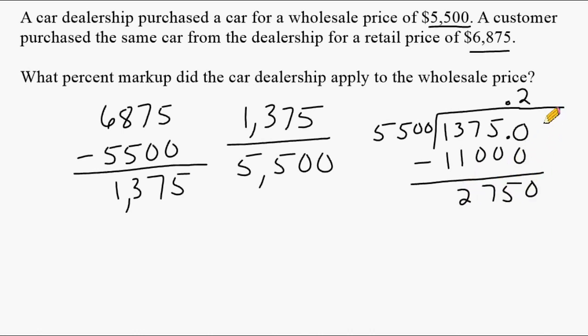Now we add a zero in the next place value and drop it down. And I'm going to estimate here, this is about $5,000 and this is a little bit over $25,000. And I know $5,000 goes into $25,000 five times. So if we multiply $5,500 by 5, we end up getting exactly $27,500. So this fits into here exactly five times, leaving us with no remainder.